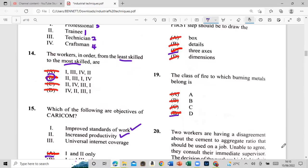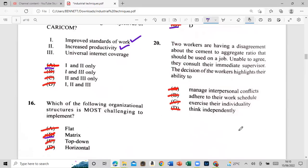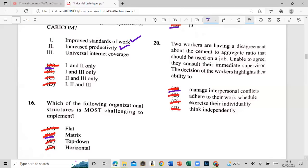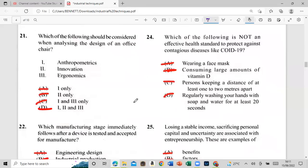You can't have no disagreement, man. Now four workers are having a disagreement with you about the cement to aggregate ratio that should be used on the job. Unable to agree, they cancel their immediate supervisor. This is enough workers highly highlights their ability to: A, manage personal interpersonal conflicts, B, idea to their work schedule, C, exercise their individuality, or D, think independently. And that's A: manage interpersonal conflicts. And when Jamaica people don't, um, you would want to step on a man to call a bad man from children, I mean guys.